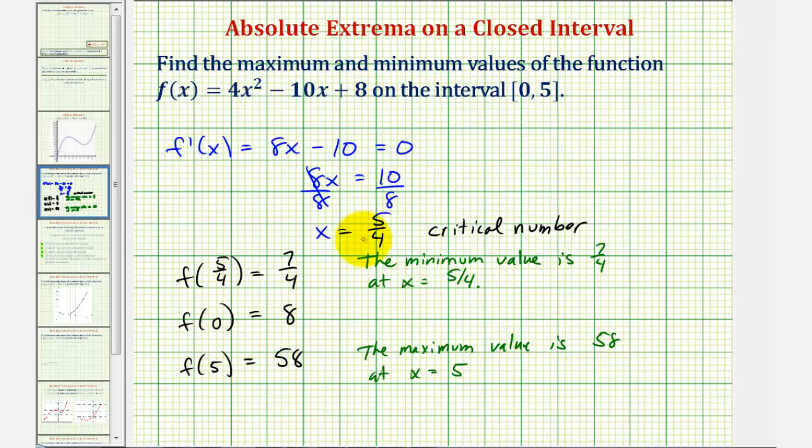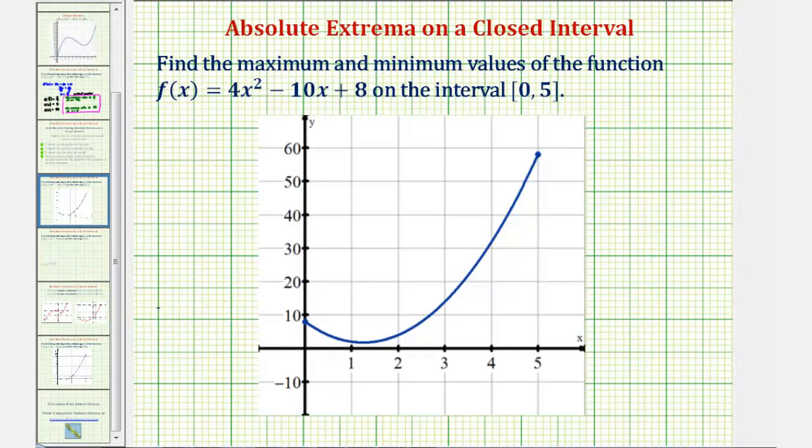Let's go ahead and take a look at the graph of our function on this closed interval to verify these results. Notice the largest function value on this closed interval is fifty-eight, which occurs at x equals five.